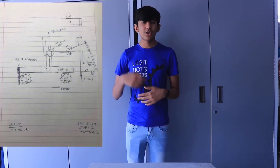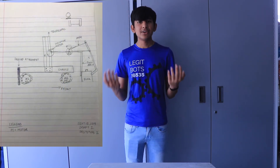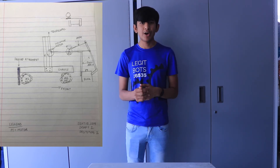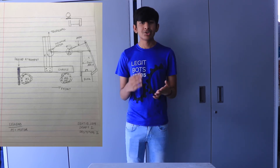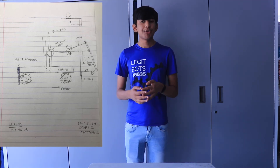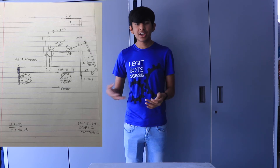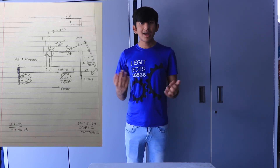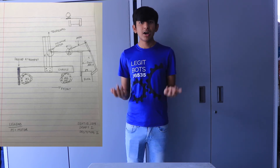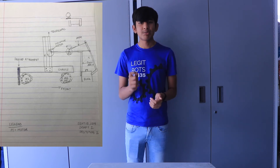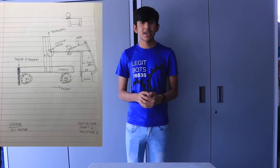Finally, something to keep in mind that's somewhat separate from the engineering process: make sure you're recording everything. This is very important in FTC, especially for the engineering notebook, because judges really like seeing your robot's timeline — how you went about solving problems and your entire design process. Take lots of pictures, write detailed logs, and use as much visual evidence as possible. Visual images are always much better than written content alone, and having this documented will help you do really well.